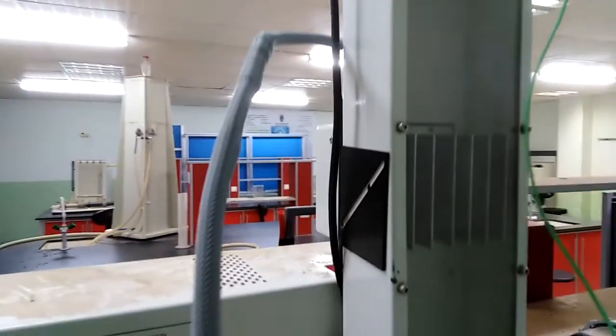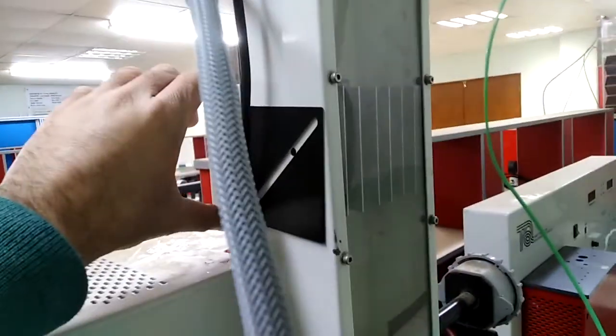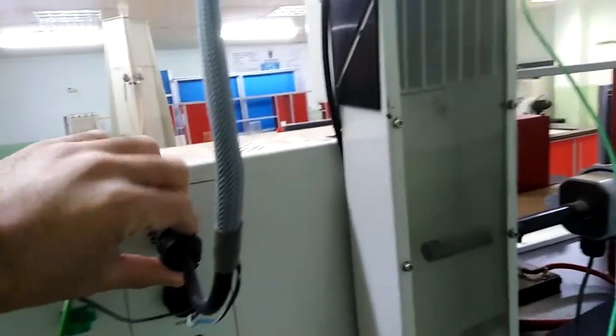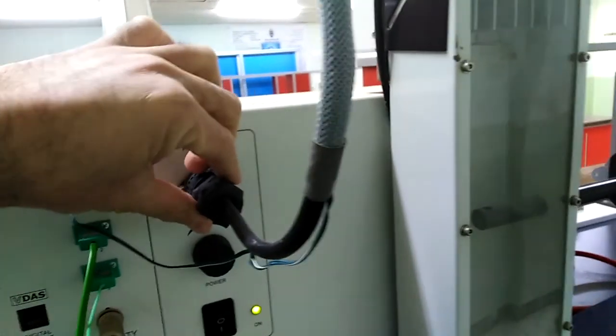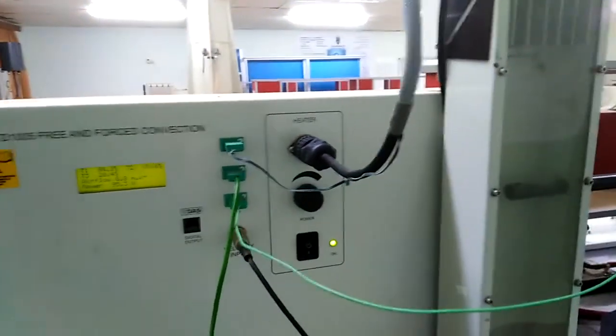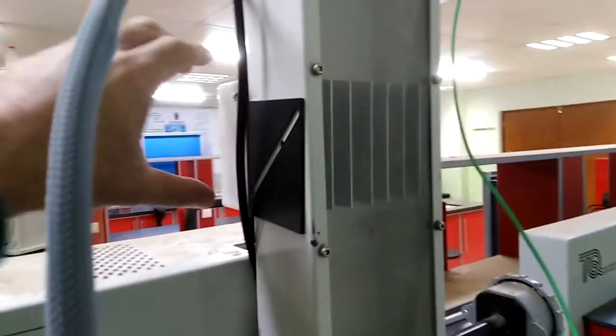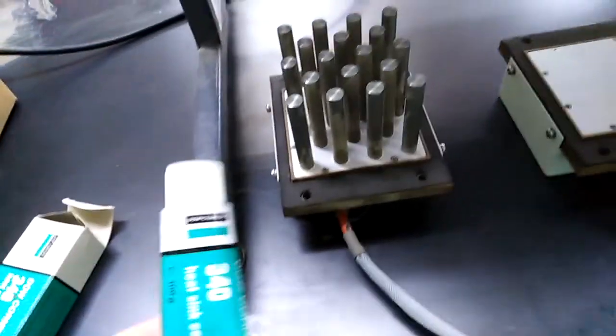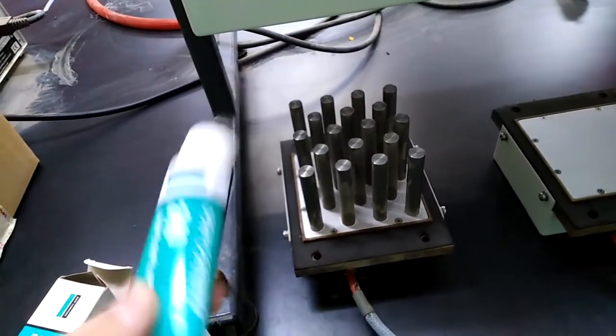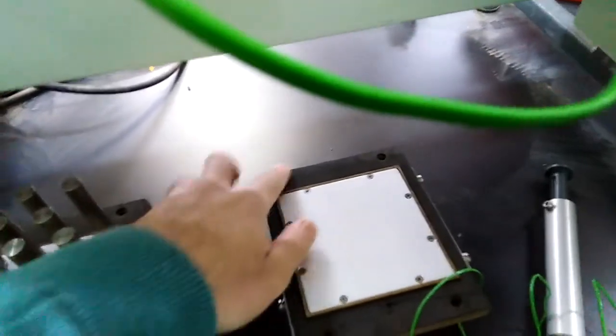First, we have to fix the surface on the device by setting it up from behind and connecting the wire into the device. Before we start, we have to wax the surface with wax cream to prevent heat loss from the sides.